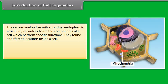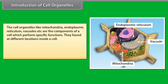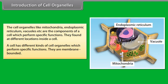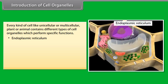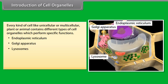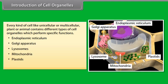The cell organelles like mitochondria, endoplasmic reticulum, vacuoles, etc. are the components of a cell which perform specific functions. They are found at different locations inside a cell. A cell has different kinds of cell organelles which perform specific functions — they are membrane-bounded. Every kind of cell, whether unicellular or multicellular, plant or animal, contains different types of cell organelles. Endoplasmic reticulum, Golgi apparatus, lysosomes, mitochondria, plastids, and vacuoles are some examples. Now let us know their structure and functions in detail.